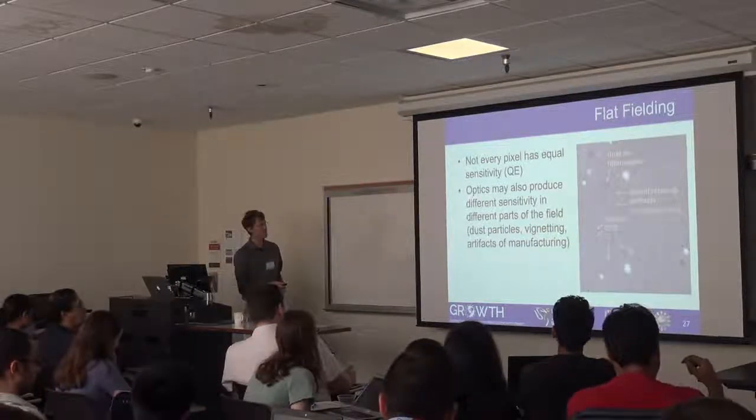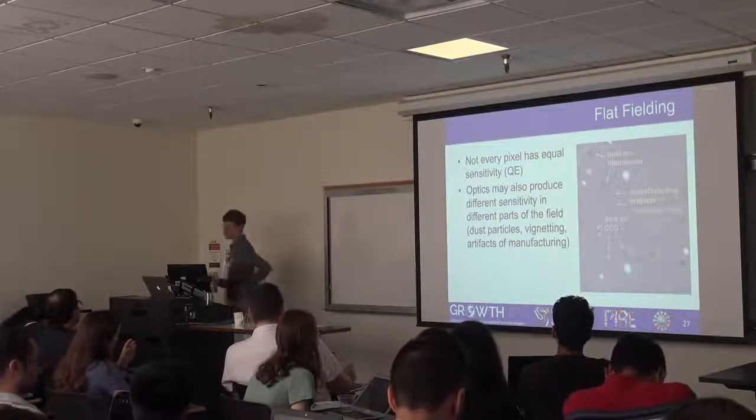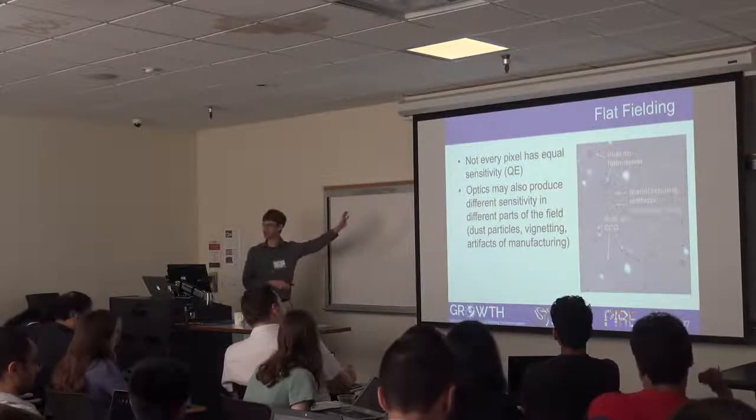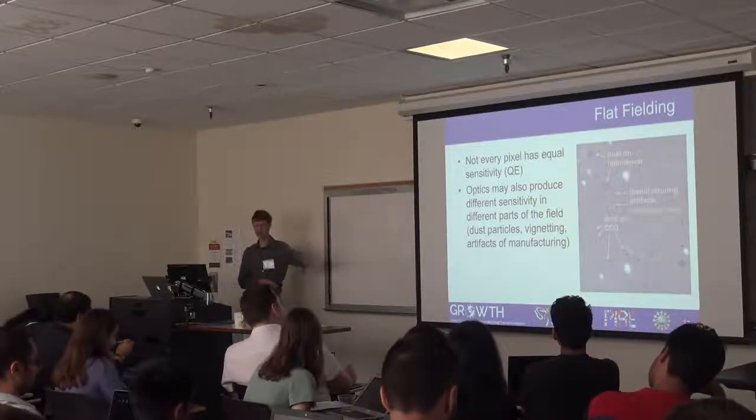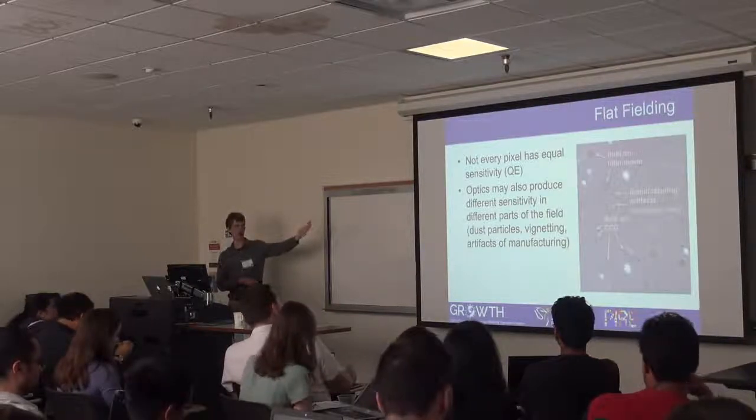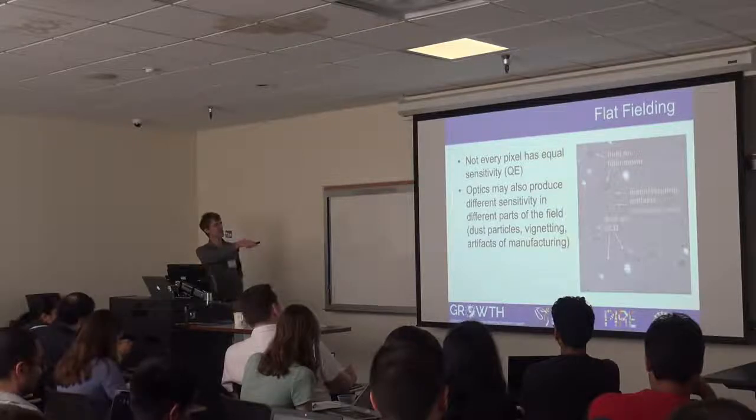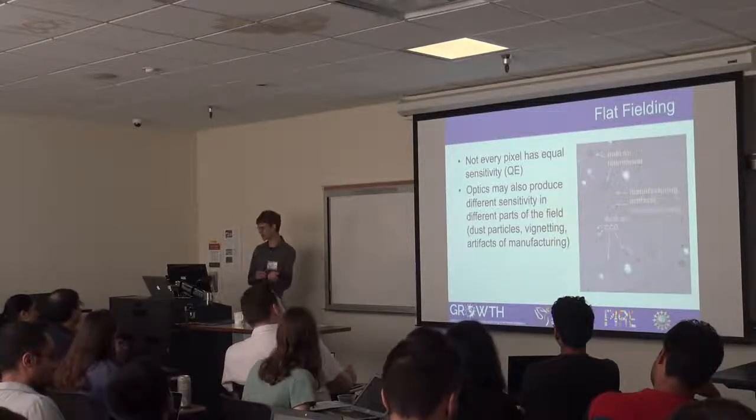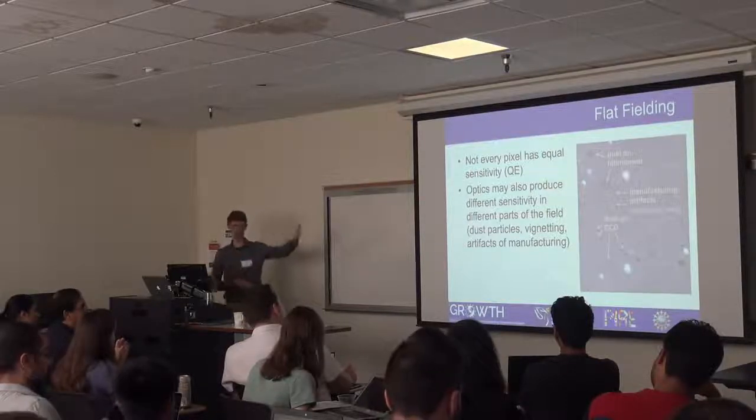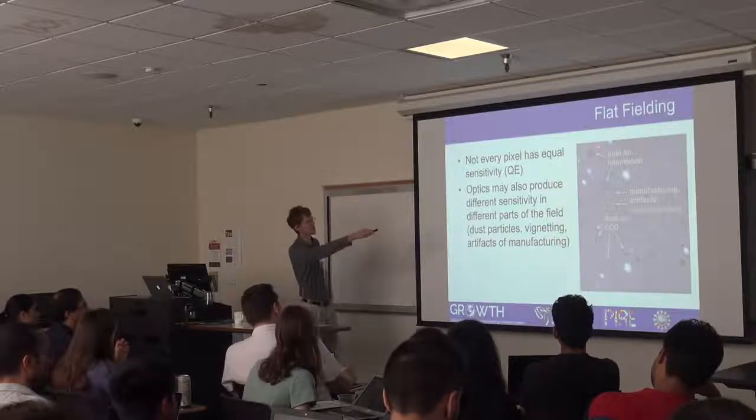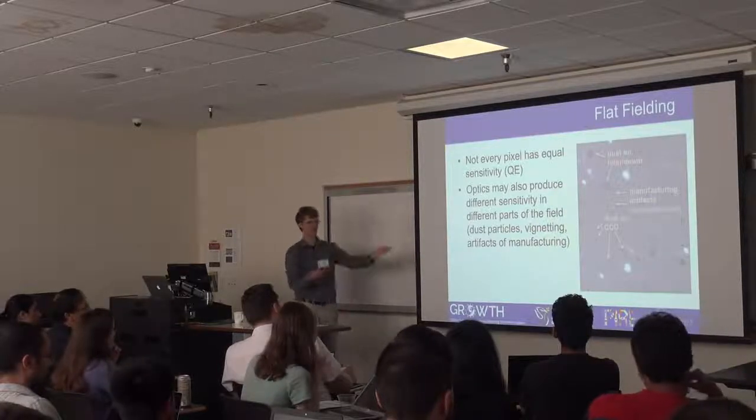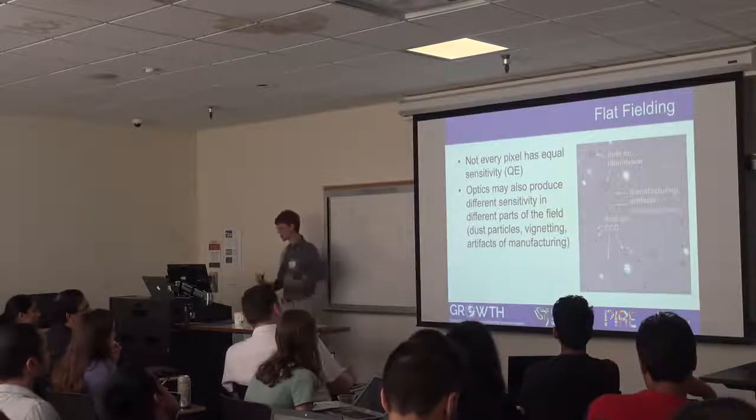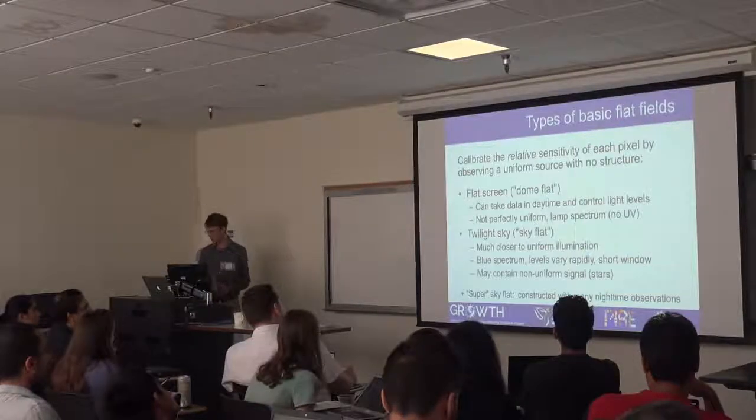Step two is flat fielding. This is basically to deal with two related issues. One is that your detector is not a million perfectly identical pixels. Every pixel has its own slightly different properties. They have different sensitivities, different quantum efficiencies. We don't want that sensitivity pattern to be imprinted in all our astronomical data. So we have to calibrate it out. In addition there are also differences in the optics. Different parts of the field may be exposed to slightly more or slightly less light. There may be dust particles sitting somewhere within the focal path. So for example this is a detector. You can see all these little donut rings. Those are out of focus dust particles. And then there's also these horizontal bars which are manufacturing artifacts. We do not want those in our astronomical data.